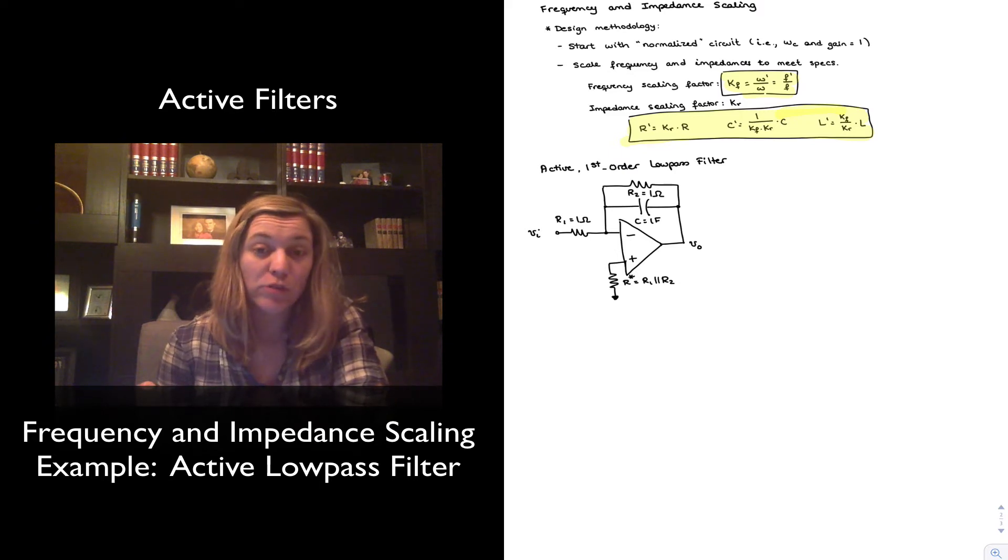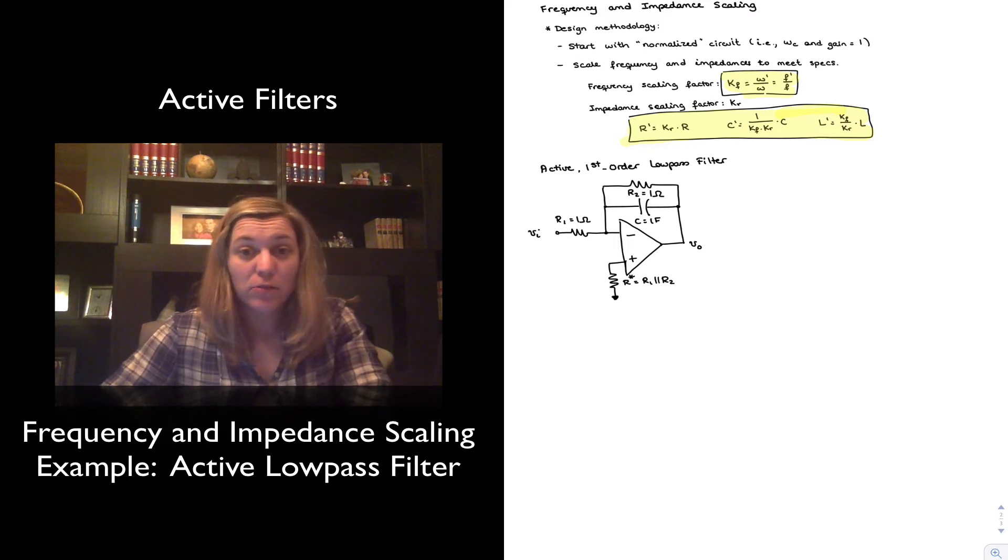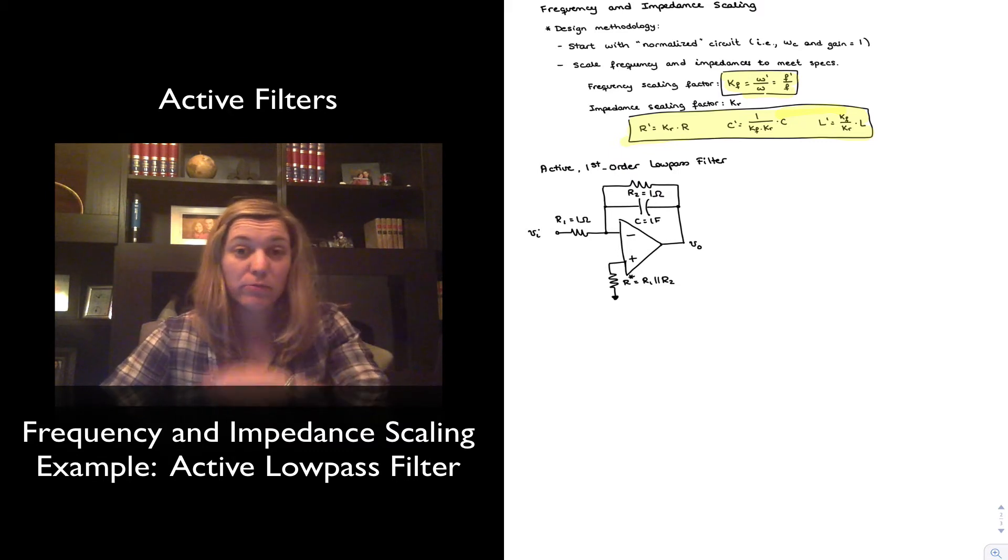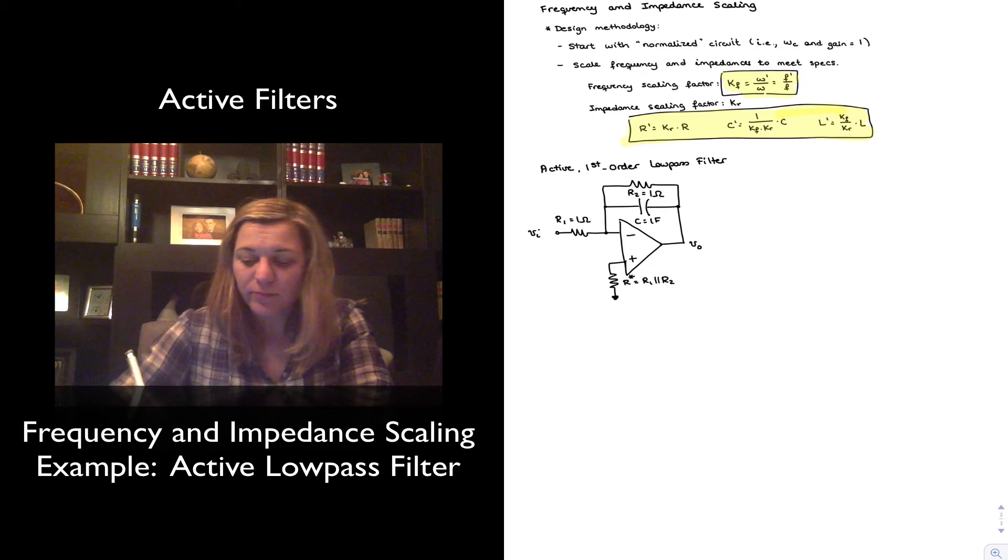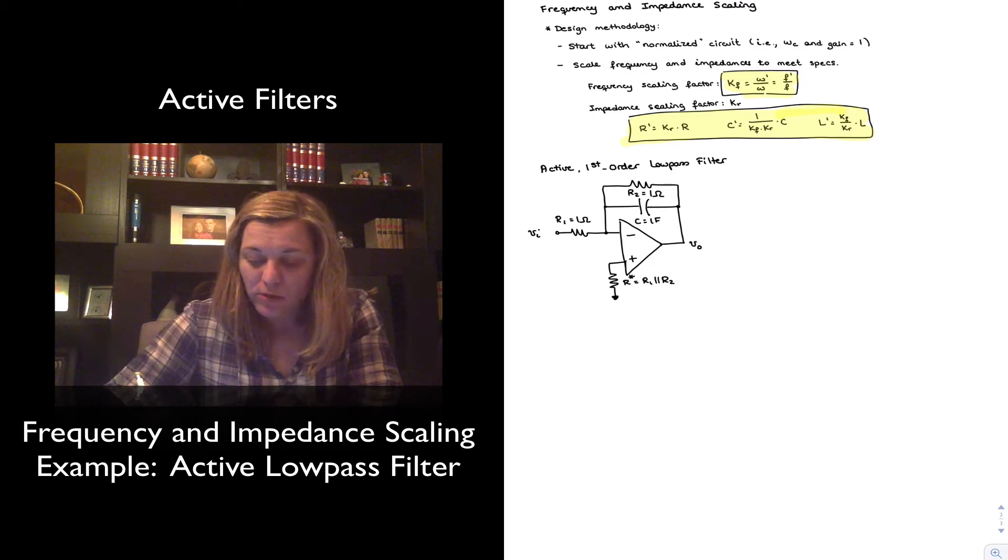And so its value is equal to R1 in parallel with R2, because a compensation resistor needs to make the resistance on both input terminals match each other. But again, those types of components that are typically not needed for either the frequency response or the gain of the circuits, they're typically marked with stars. They're non-essential resistors, basically.